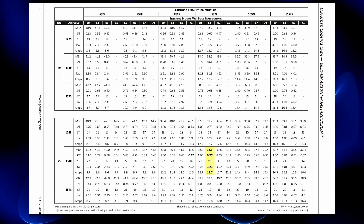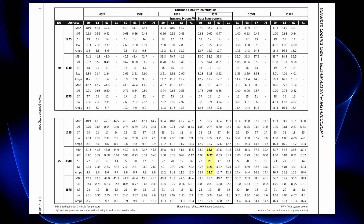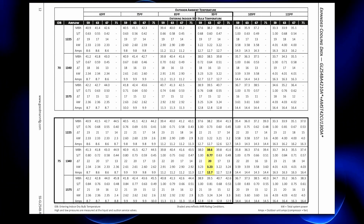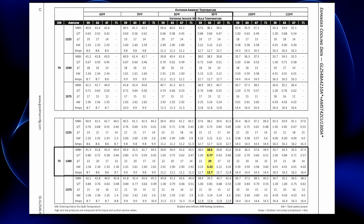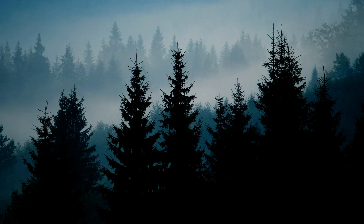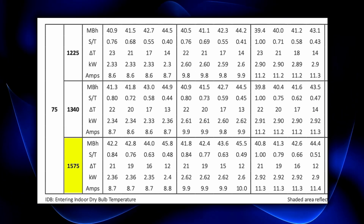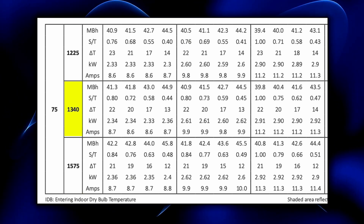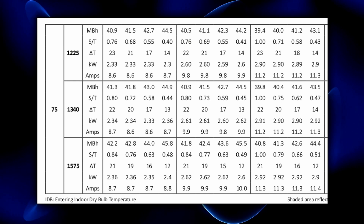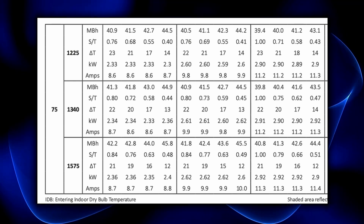In this example, we've got 95 degrees outside, 75 degrees inside, and we've selected 1340 as our airflow. Can you speak on why we're selecting that one in Virginia versus one of the others depending on what part of the country you're in? Mainly it has to do with the amount of humidity. The 1575 is for a dry climate, 1340 is for a middle wet climate, and 1225 is for a wet climate. So someone in Florida is probably in the 1225 category with this particular heat pump.